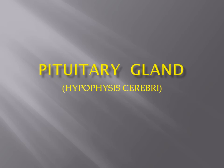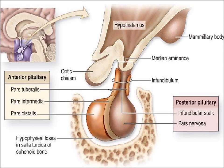Pituitary gland is also known as hypophysis cerebri and this is a very important endocrine gland. It is also known as the master endocrine gland. Here you can see the structure of the pituitary gland. The pituitary gland has two important areas.